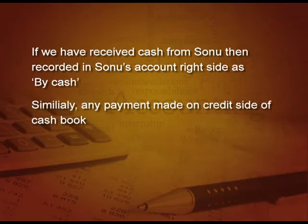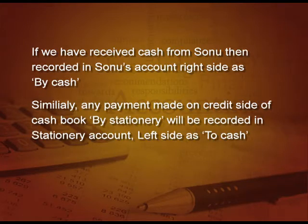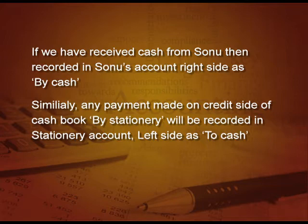As you know, all the entries have two aspects — one debit and one credit — this was discussed in our previous classes. Similarly, any payment made on the credit side of the cash book — for example, if we are purchasing stationery — then we will write on the credit side 'by stationery,' and this will be recorded in the stationery account on the left side, that is the debit side, as 'to cash.' So in the stationery account debit side, in the cash account credit side — both aspects are there. Debit and credit — double entry system of Luca Pacioli. I hope you remember all these things.